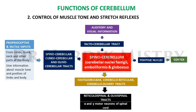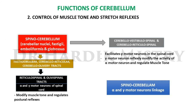Efferents from the spinocerebellum originate in the nucleus fastigii, nucleus emboliformis, and nucleus globosus, and travel via fastigiobulbar, cerebelo-reticular, and cerebelo-olivary tracts. Via reticulospinal and olivospinal tracts they reach alpha and gamma motor neurons of the spinal cord, modifying muscle tone and regulating postural reflexes. The spinocerebellum is the site of alpha-gamma motor neuron linkage.